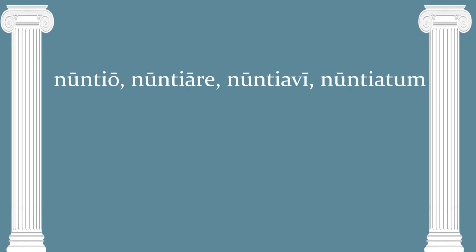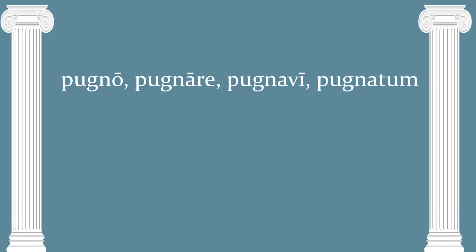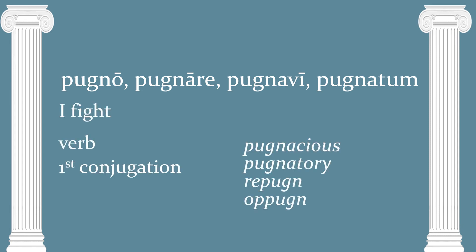Next we have nuntio, nuntiare, nuntiavi, nuntiatum — all four principal parts. This verb means I announce or I report. You'll remember that earlier in the year we had nuntius, meaning the news or the messenger. Next we have one we've definitely seen before: pugno, pugnare, pugnavi, pugnatum — a verb that means I fight. We get words like pugnacious, pugnatory, repugn, and oppugn.